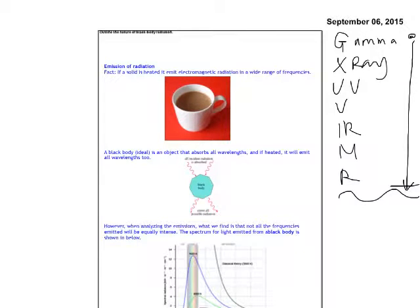Now you know for a fact that a hot object, because you looked into radiation a few lessons ago, any hot object will emit electromagnetic radiation in a wide range of frequencies. So this cup of coffee is emitting infrared. And you know that because when you touch it, it will be hot. With time, the amount of infrared given off is much less because the temperature decreases.